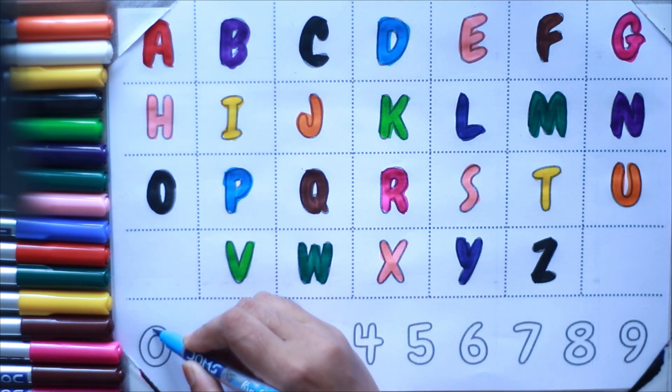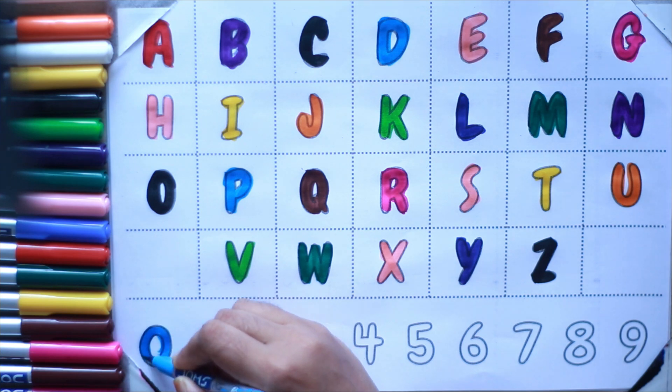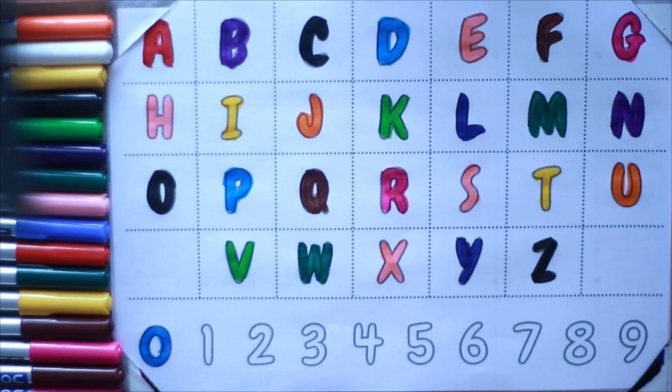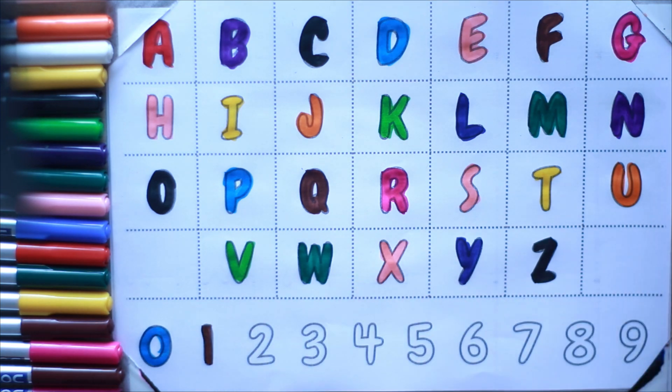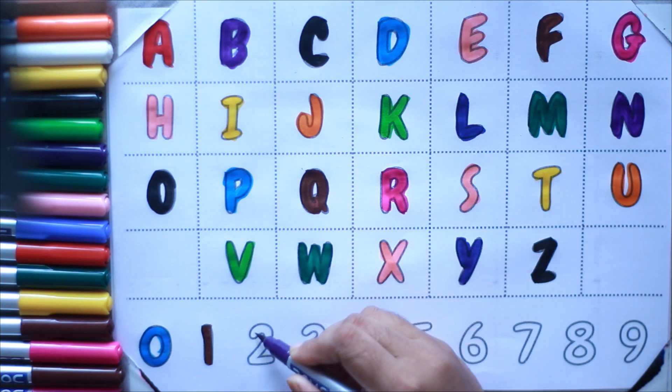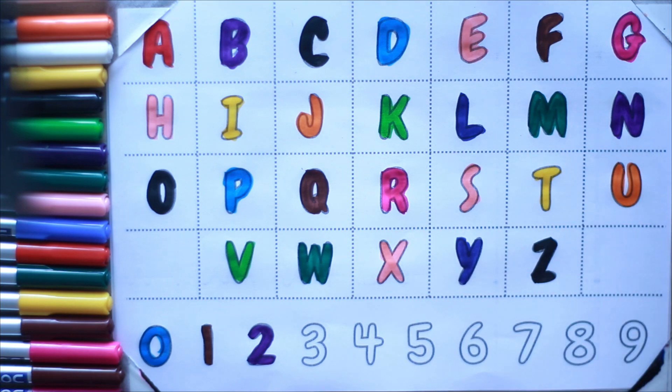Sky blue color zero. Brown color one. Violet color two. Pink color three. Yellow color four. Orange color five. Green color six.